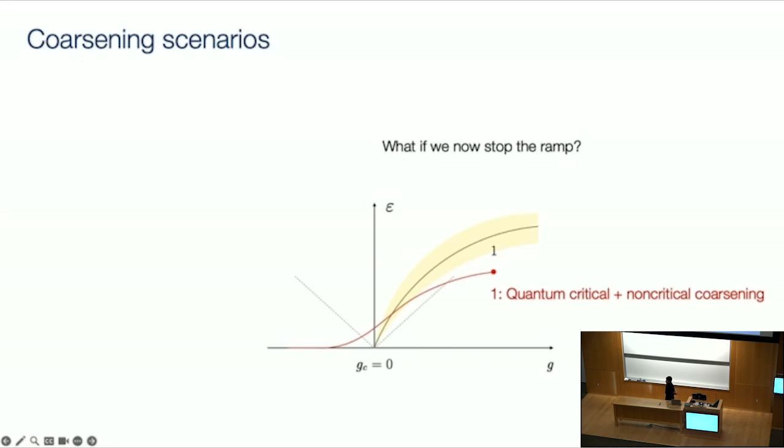Now, so far, I've been talking about a ramp that continues without end, but what if we stop the ramp? So one scenario that we can get is what I've already outlined. You can have quantum critical followed by non-critical coarsening, but there could be other interesting scenarios. So one option is to stop the ramp at or near the phase boundary, this thermal phase boundary, which we assume is critical. And then, after quantum critical coarsening, you can have a small bit of classical critical coarsening, which is governed by a totally different exponent, which I denote by z bar. So now I understand that I've introduced many different flavors of coarsening, three, to be precise. But the nice thing is that's it.